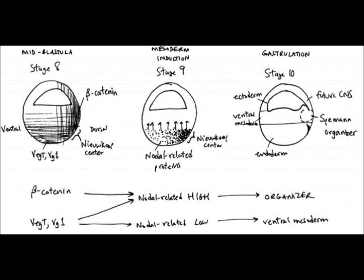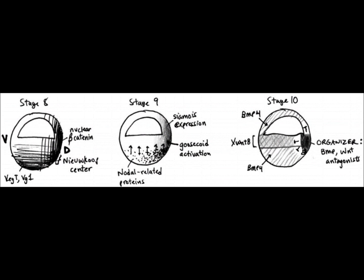The Spemann organizer is required for the proper development of dorsal structures and also interacts with the Wnt pathway albeit in a different manner than what has been shown so far. Stage 8 and stage 9 show what we have already gone over which is high levels of nuclear beta-catenin with VEG-T and VEG-1 specify a high level of nodal-related proteins. The area where the concentration of nodal-related protein is highest specifies the Nieuwkoop Center which then goes on to induce the organizer in the future dorsal side.